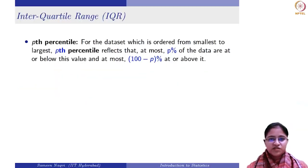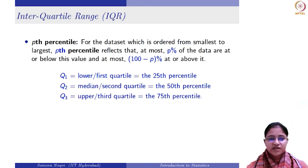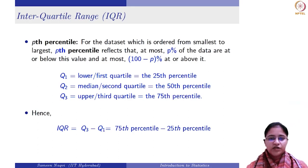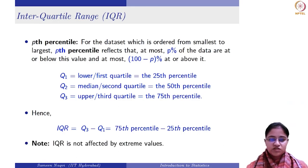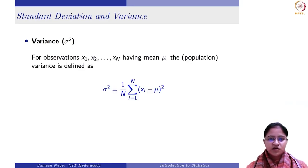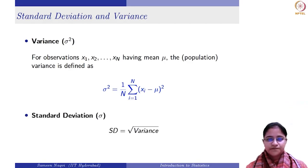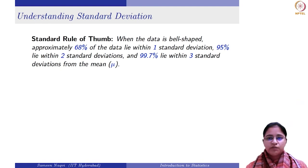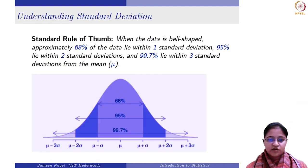So we have talked about the pth percentile, the first quartile, second quartile and third quartile. Then we studied IQR, which is the difference between the 75th and 25th percentile, and we have also seen that it is a robust measure because it is not affected by extreme observations. Then we moved on to studying the variance, discussed the formula, and the standard deviation. I was just talking about the standard rule of thumb — as you can see in the figure, 68%, 95%, and 99.7% of observations lie in this way.